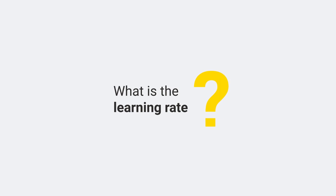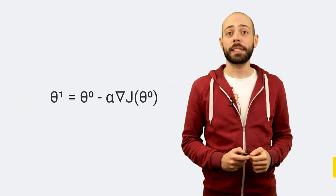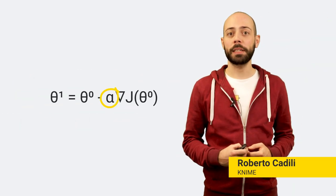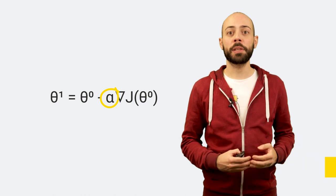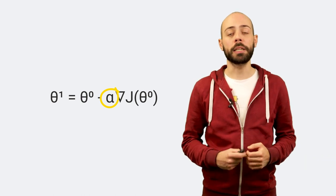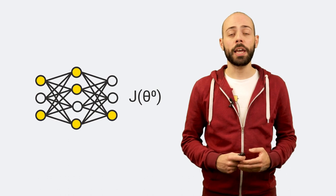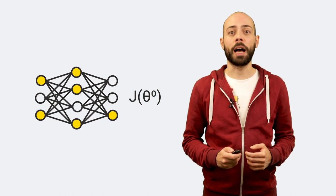What is the learning rate? The learning rate is a configurable hyperparameter used in optimization algorithms to train many machine learning models, such as neural networks. It controls how much to change the model in response to the estimated error each time the model parameters are updated.